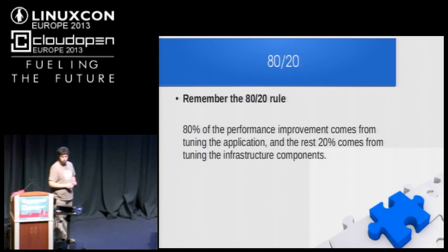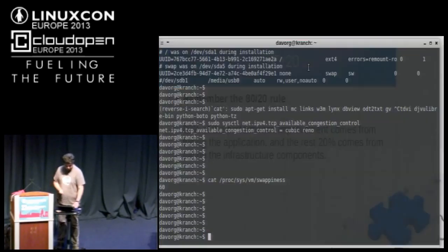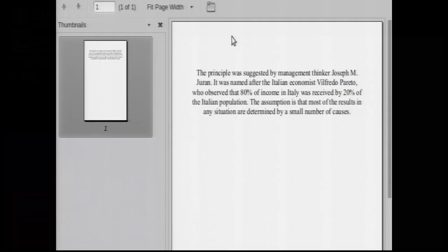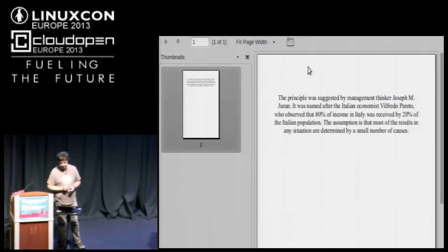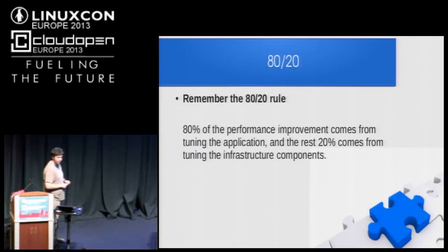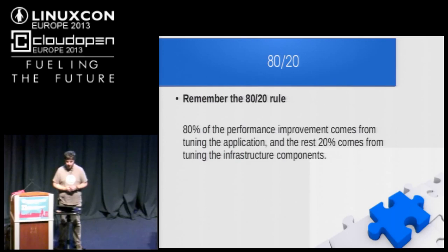When making optimization, always remember the 80-20 rule — the Pareto principle. Wilfredo Pareto observed that 80% of income in Italy was received by 20% of the Italian population. Translated to IT: 80% of the performance improvement comes from tuning the application, and the remaining 20% comes from tuning the infrastructure components.